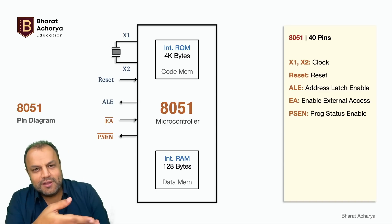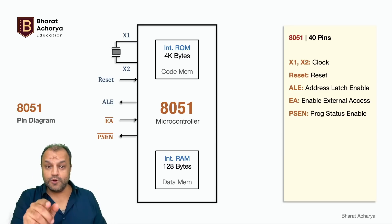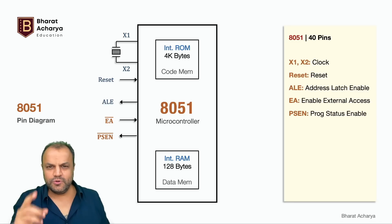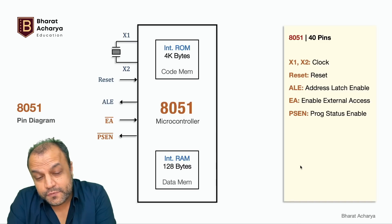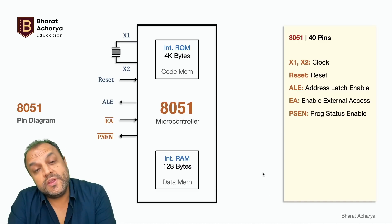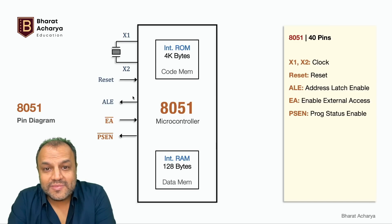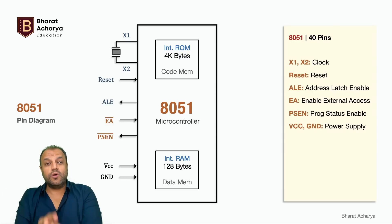8051 has internal memory but allows you to expand and connect external memory whenever you want, as per your requirement. On a remote you'll never connect external memory; on a phone you do — it comes with internal memory but allows you to connect external memory via a card. 8051 also has this provision. If your circuit demands more memory you can connect external ROM, and that's when EA bar and PSEN bar come in handy.